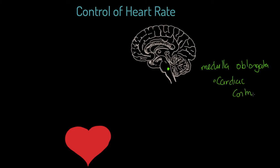Before we get into the information that this receives through negative feedback loops, we want to recognise that this cardiac control centre is actually connected by a neural pathway, by nerves, to a little node on the heart, which I'm going to position above the right atrium. And this here is your sinoatrial node. Now this sinoatrial node can also be referred to as your pacemaker. So we have this part of the brain and we have this control mechanism of the heart.